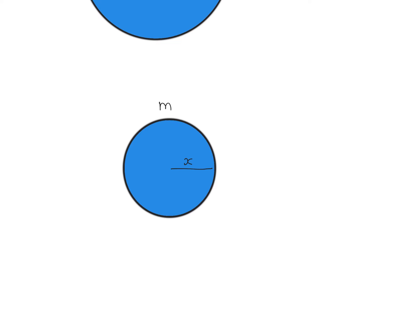At an intermediate situation the radius of the sphere is x. We keep on adding masses, increasing the total mass from 0 to capital M and radius from 0 to R. At this intermediate situation its mass is small m and its radius is x.